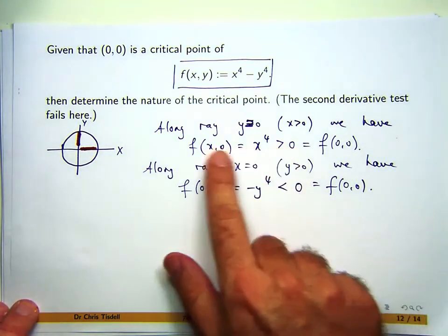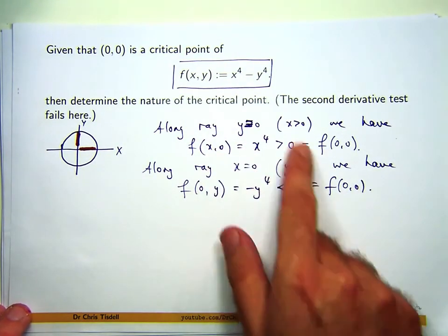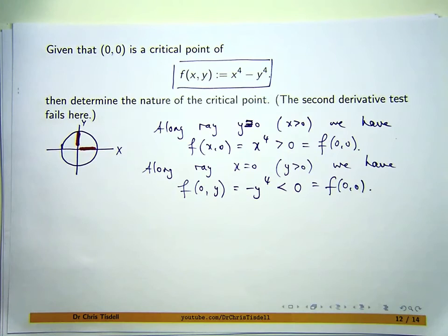Now, if the function was greater than the value of the function at the critical point for all points in that disk, then we'd be talking about a local minimum. If the function was less than the value of the function at zero for all points in the disk, we'd be talking about a maximum. But here we've got actually both of these inequalities going on. Let me make that a bit more precise.